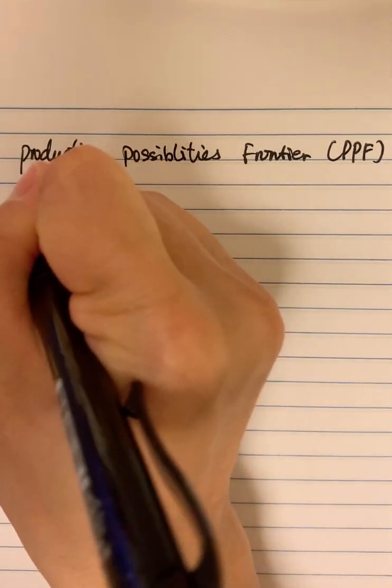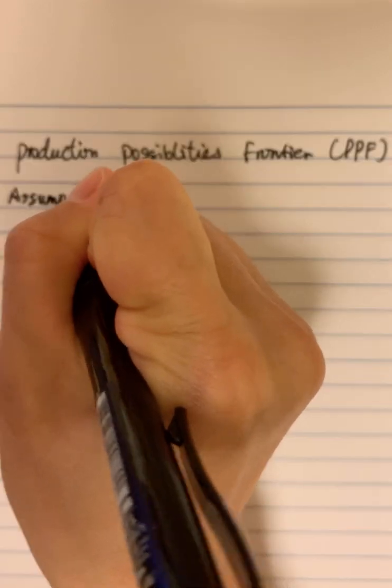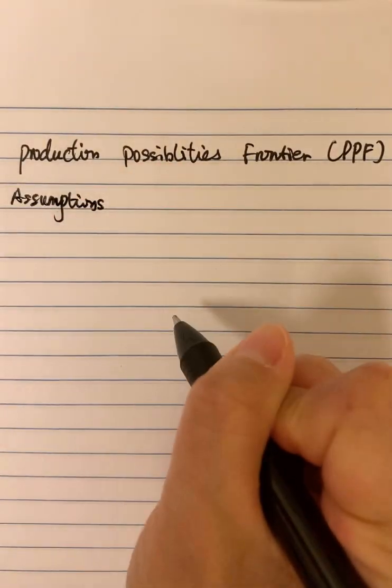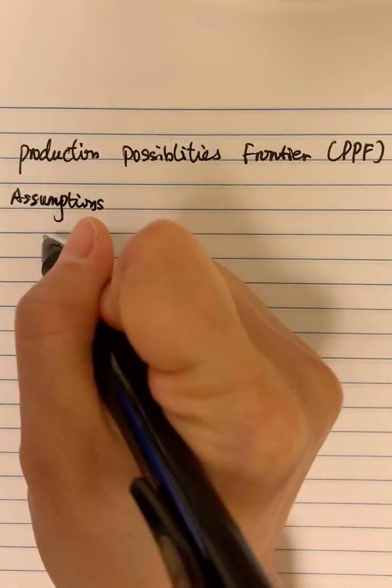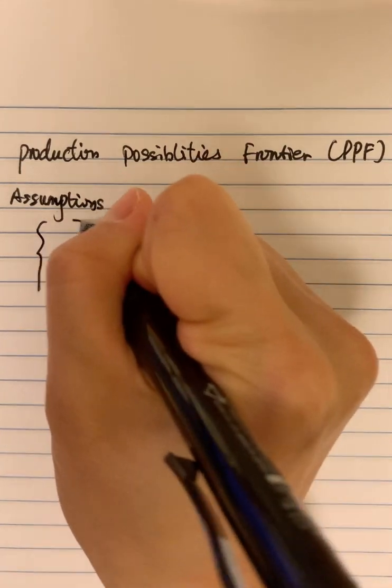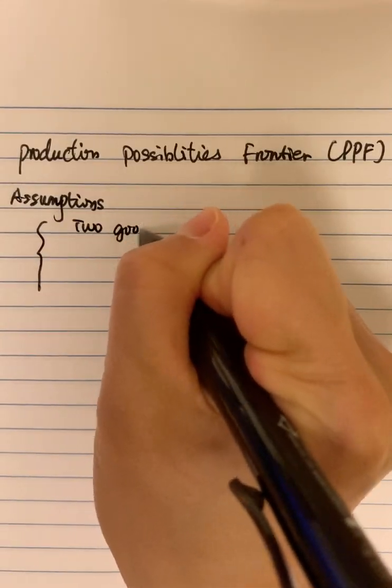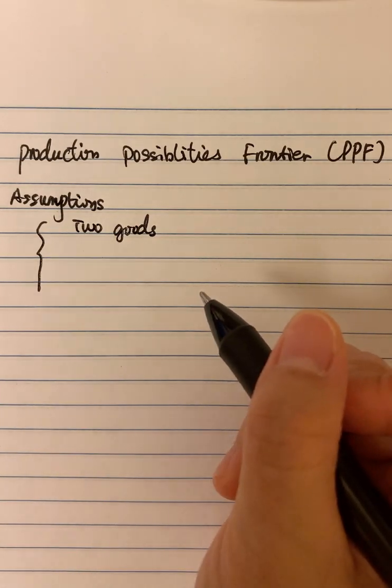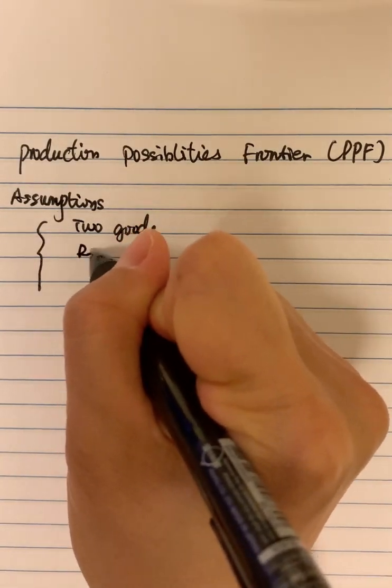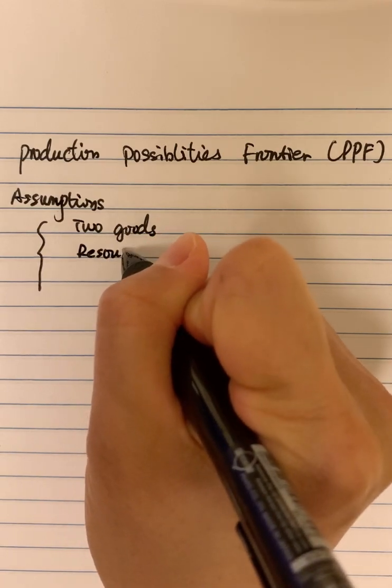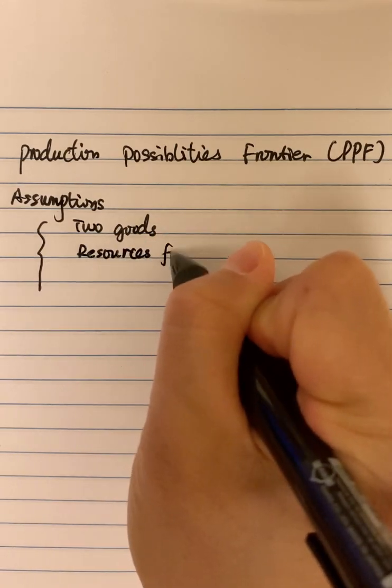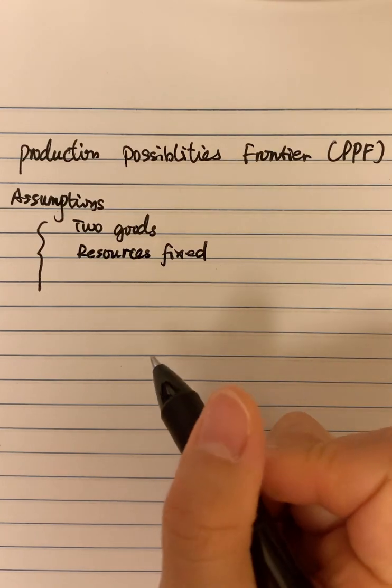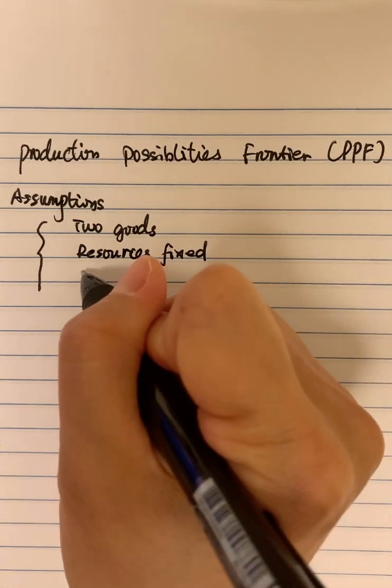So for this PPF, it first has three assumptions. Those three assumptions will be only two goods, because it shows the two goods combination, and then we should have fixed resources, and we also have only fixed technology.